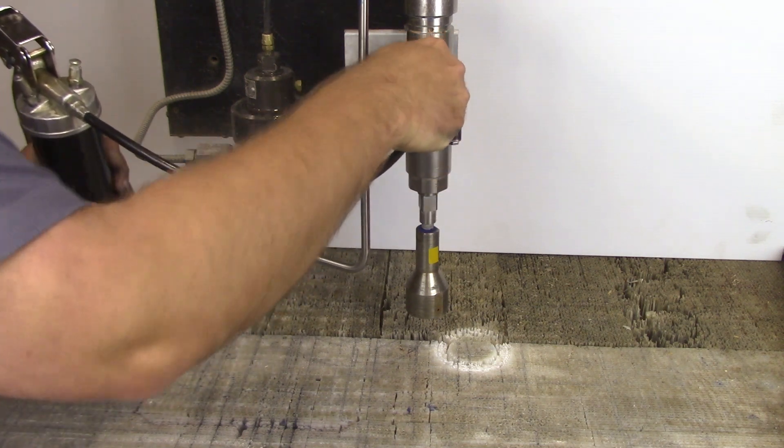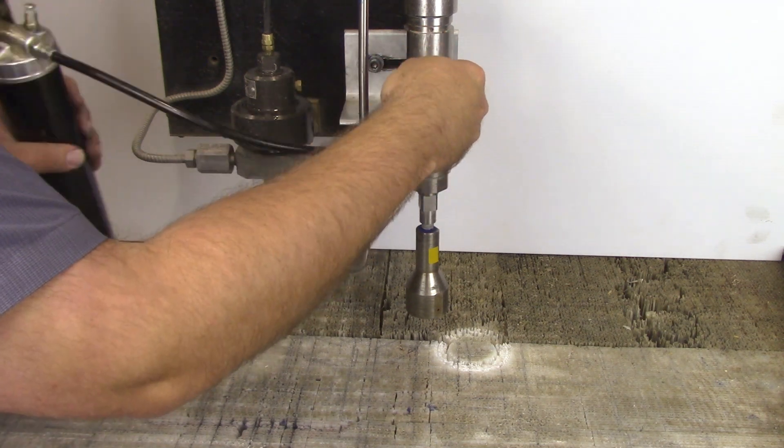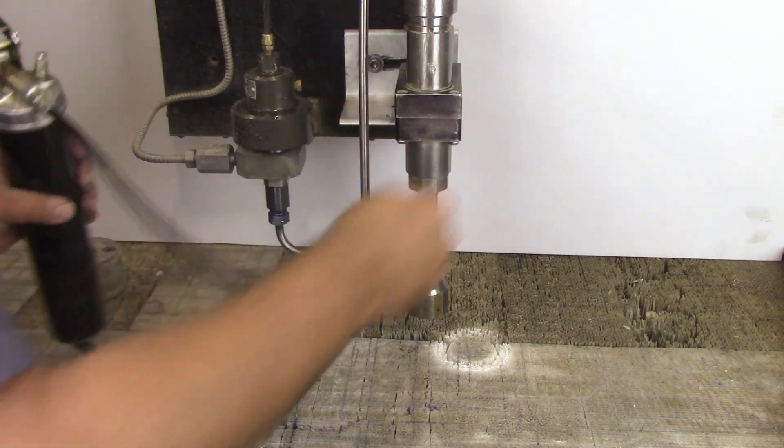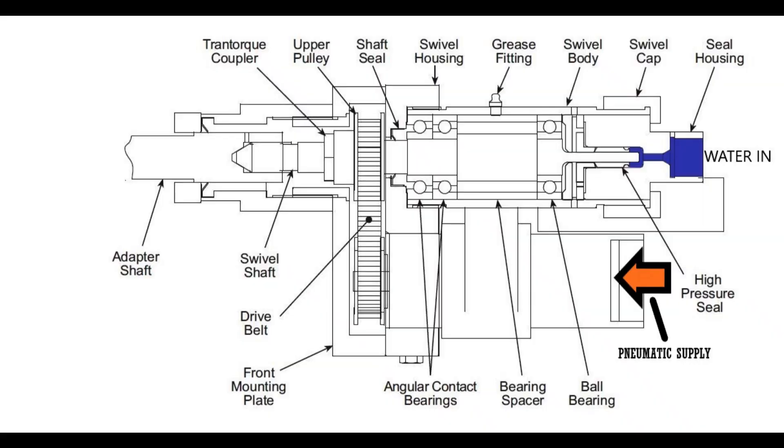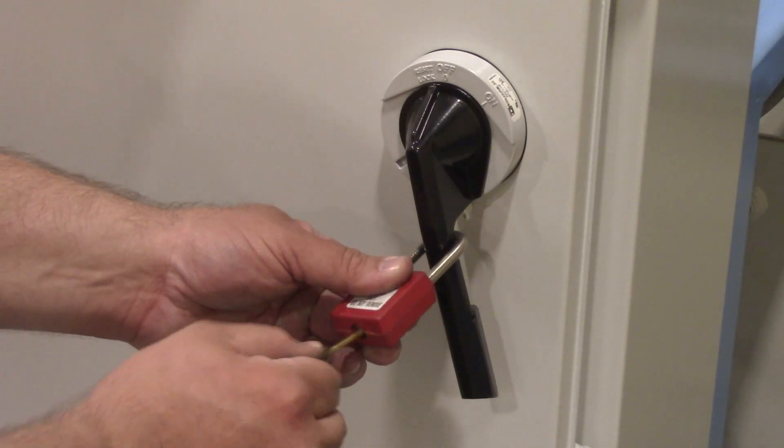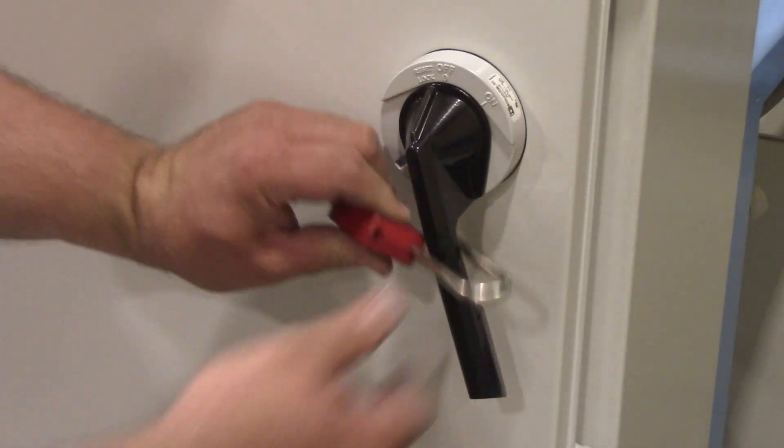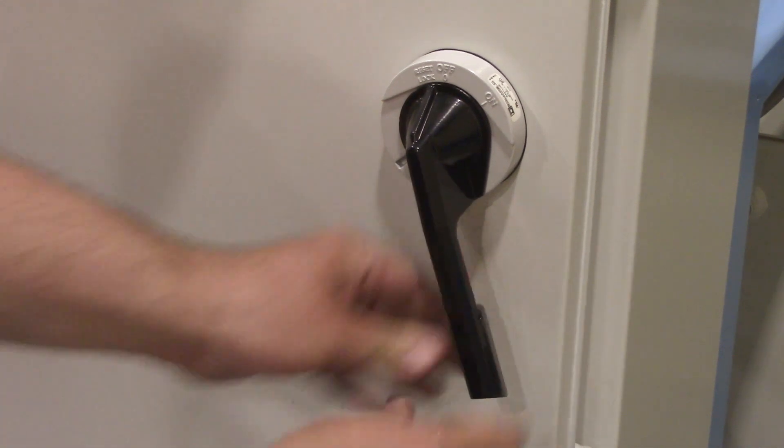Lubricate the swivel assembly with general purpose grease through the grease zerk. Connect the ultra high pressure water supply and connect the pneumatic supply. Unlock the power to the pump and test the swivel for proper operation.